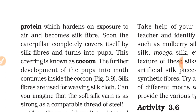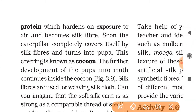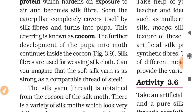In the life history of the caterpillar, you need to know how silk is formed. Soon the caterpillar completely covers itself with silk fibers and turns into a pupa. This covering is known as a cocoon. The further development of the pupa into a moth continues inside the cocoon.